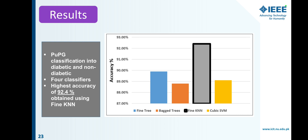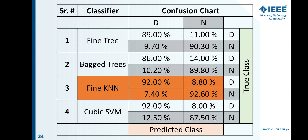We successfully developed a classification system that classifies individuals into diabetic and non-diabetic classes. Among the classifiers used, fine KNN gave the highest accuracy of 92.4 percent. Looking at the confusion chart, fine KNN predicted 92 percent of diabetic classes correctly, with 8.80 percent of diabetic class incorrectly predicted as non-diabetic. In case of the non-diabetic class, 92.60 percent was predicted correctly and 7.40 percent was predicted as diabetic class.